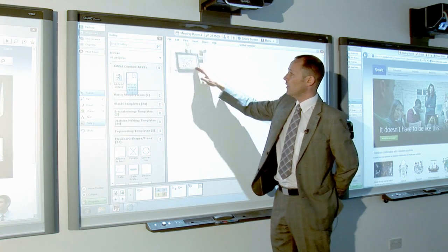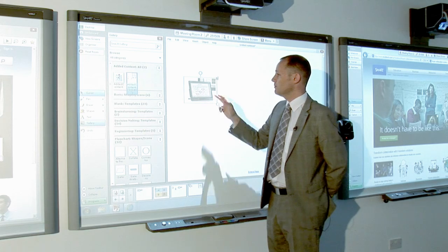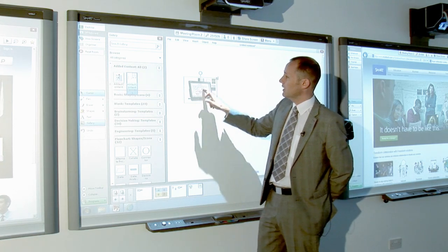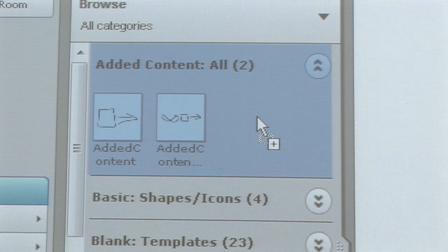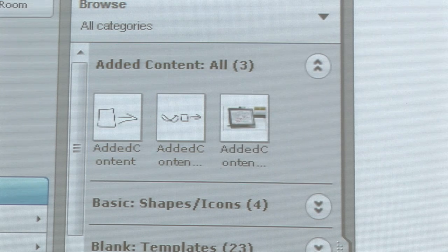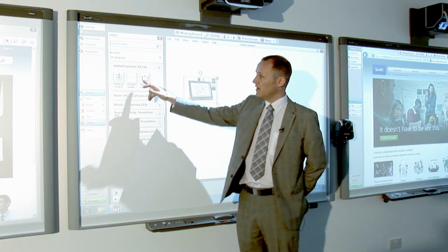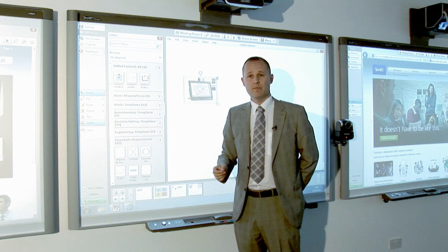And it's now there on my whiteboard ready to use. So I simply take that image there and I can drag and drop it into my content. It takes a second to drop it in. And now I have that available permanently within my business gallery.